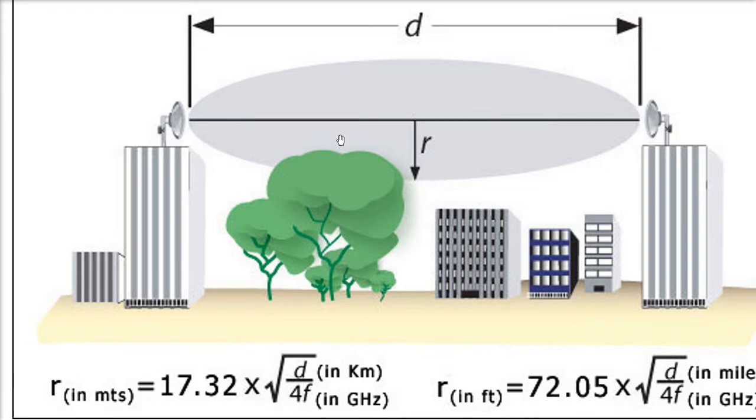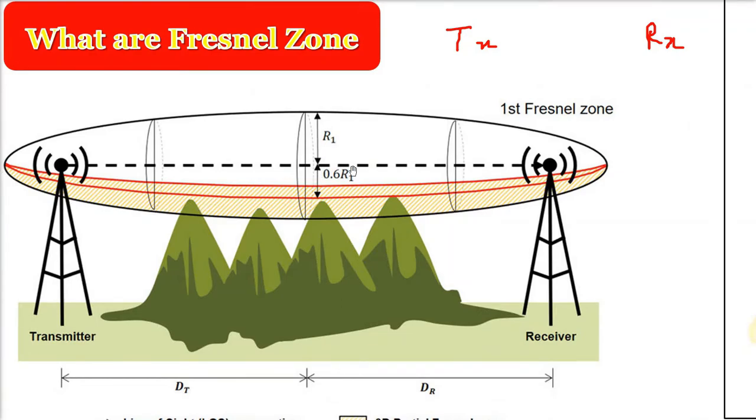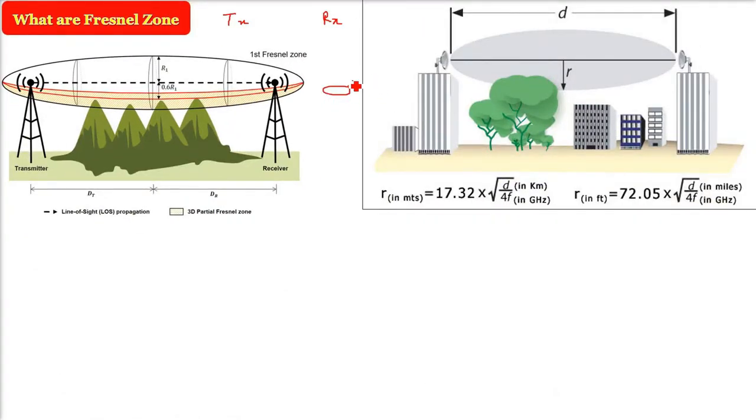Whenever we are communicating the waves, because this is line of sight, this is a capsule shaped area which is formed. There will not be one Fresnel zone, there will be multiple Fresnel zones, but we are more interested in the first Fresnel zone.